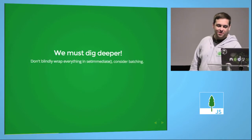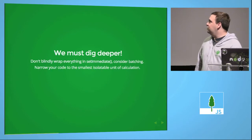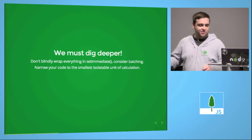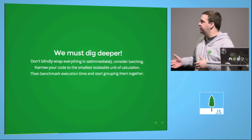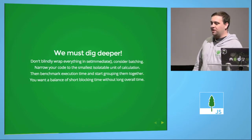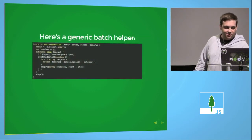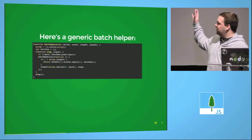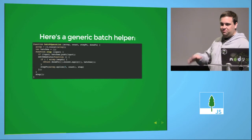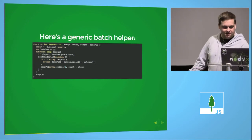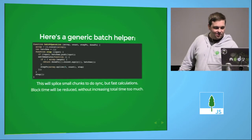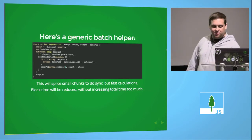So we must dig deeper. Don't blindly wrap everything in setImmediate — consider batching. You want to narrow your code to the smallest isolatable units that are repeatable bits of code. Benchmark how quickly each piece runs and start grouping them together. Search for a balance: you don't want short blocking time without taking forever. Here's a little generic batch helper — just give it an array, how many items you want to run a calculation on, a function to do each calculation, and another one to receive the result. It'll split into chunks and do your fully fast calculations, allowing your block time to be reduced without increasing total time too much.